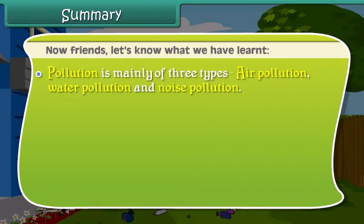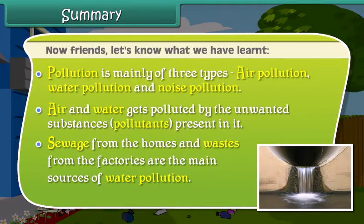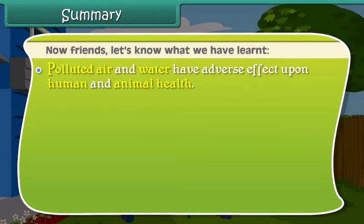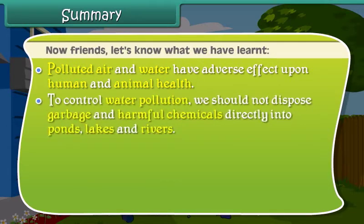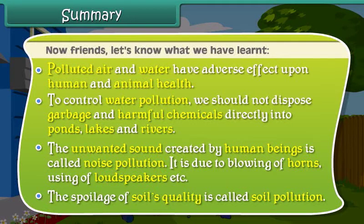Pollution is mainly of three types: air pollution, water pollution and noise pollution. Air and water get polluted by unwanted substances — pollutants — present in them. Sewage from homes and wastes from factories are the main sources of water pollution. Polluted air and water have an adverse effect on human and animal health. To control water pollution, we should not dispose garbage and harmful chemicals directly into ponds, lakes and rivers. The unwanted sound created by human beings is called noise pollution, caused by blowing of horns and using loudspeakers. The spoilage of soil quality is called soil pollution.